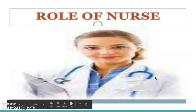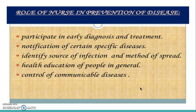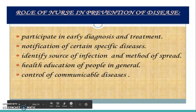So what is the role of the nurse in disease causation? The role of the nurse in prevention includes: participating in early diagnosis and treatment — identifying cases early before they become very sick and spread disease to others; notification of certain specific diseases, especially communicable diseases, to the relevant authorities; identifying the source of infection and method of spread; health education of people in general; and control of communicable diseases. These are all the roles of the nurse in prevention of disease.